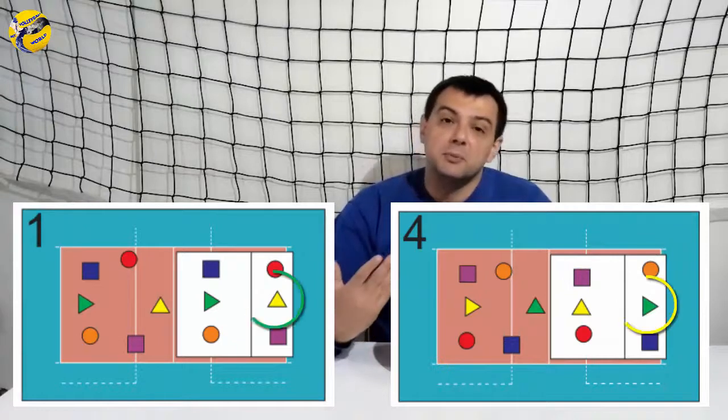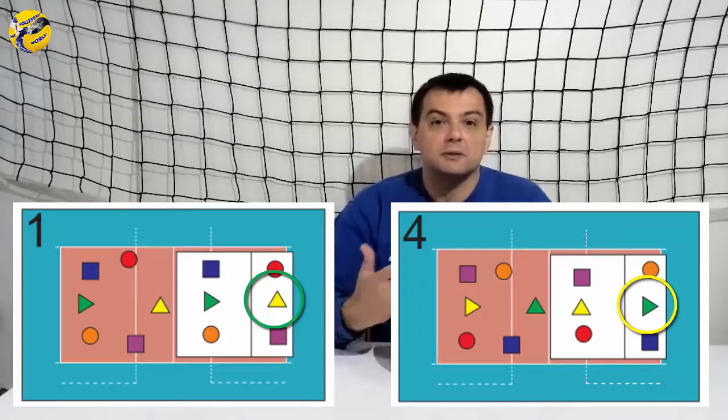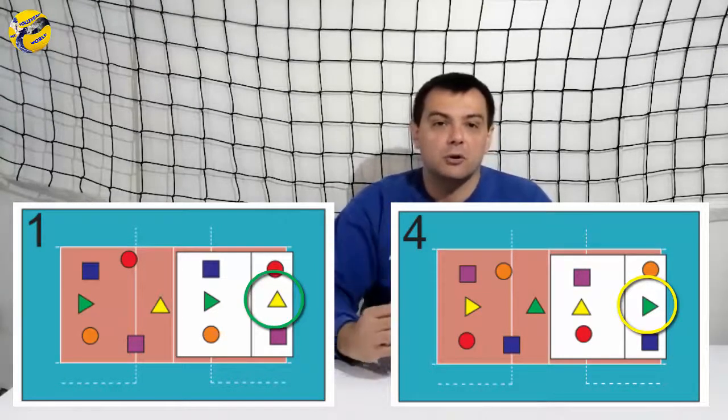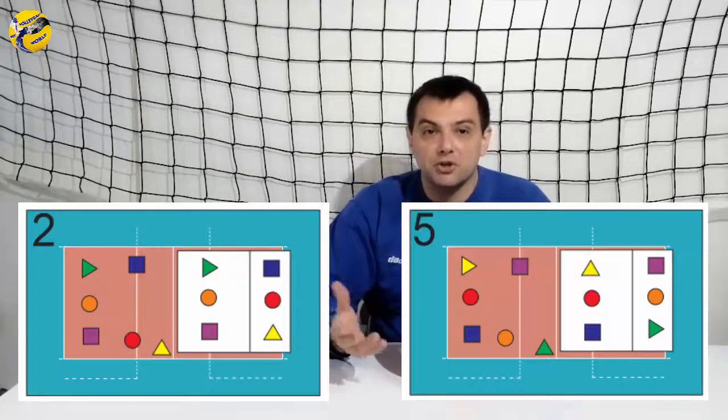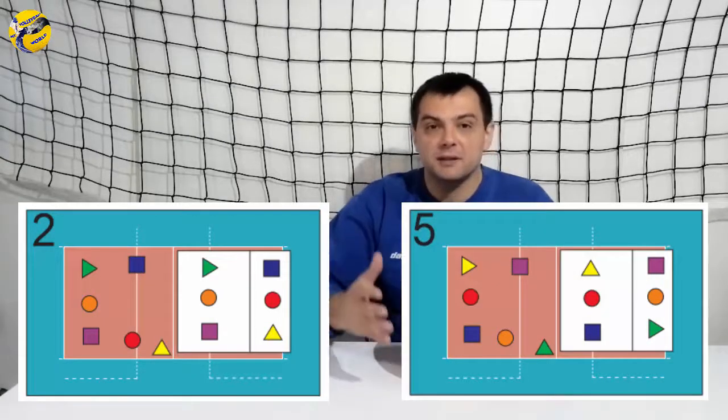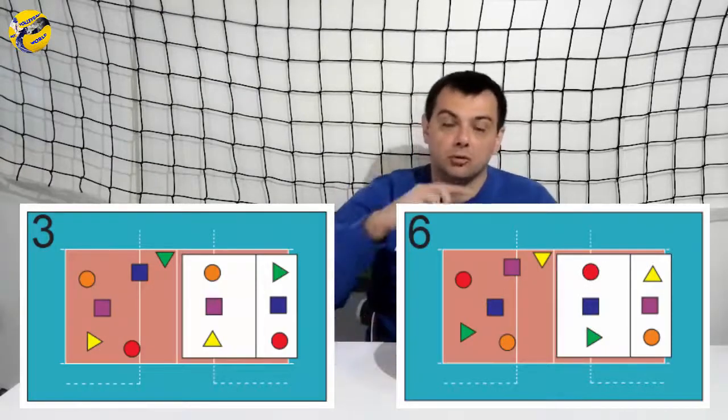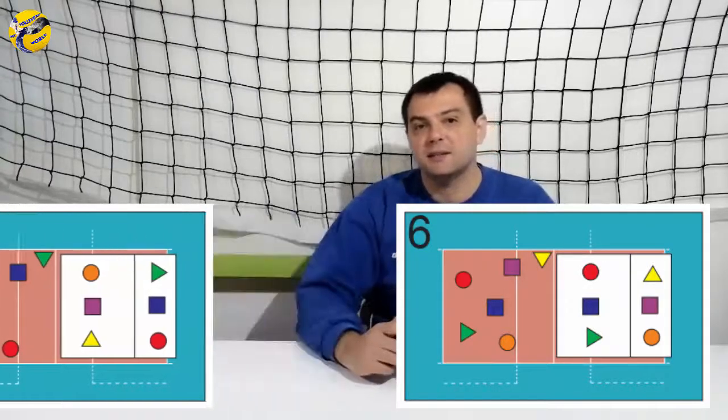This rotation is practically the same as the first, but now the second setter is at position number three. The rest of the players are going to arrange on the court as the previous rotation you have seen. Rotation number five has the same formation as rotation number two with different players in the first line. Rotation number six has the first setter back onto the first line and the second setter is serving. The rest of the players are at diagonals of their positions at rotation number three.